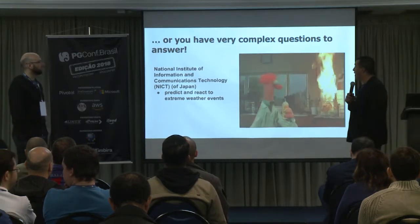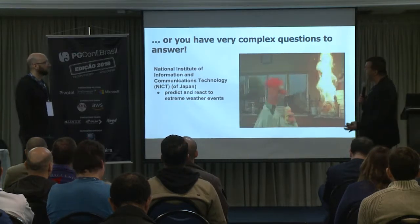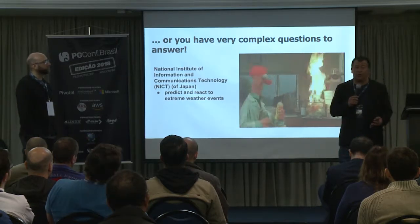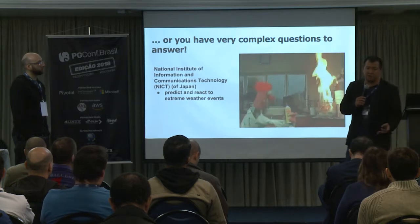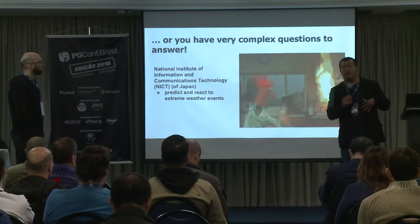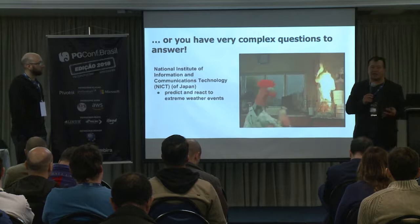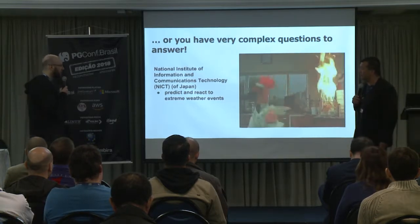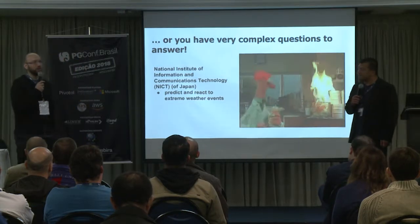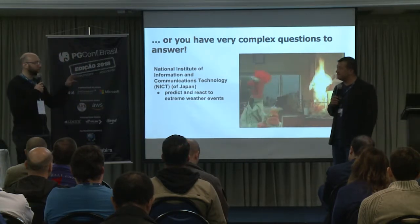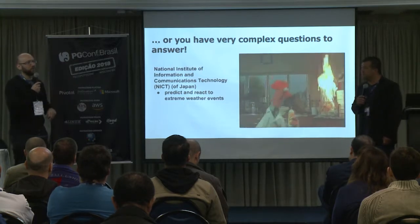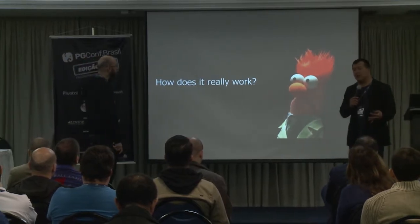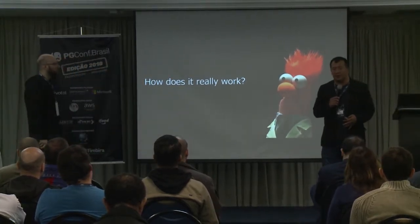Another use case is answering very complex questions. In Japan, they need to react quickly to extreme changing weather conditions. Think about all the metrics that go into measuring weather predictions — there is a lot of data and it comes in quickly. They use PostGIS geospatial capabilities and measure weather conditions and traffic, which is a large analytical use case.